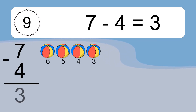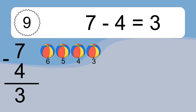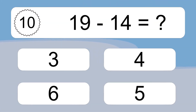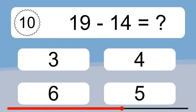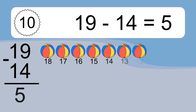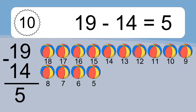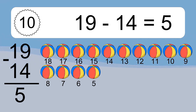7 minus 4 equals what? 7 minus 4 equals 3. Let's count it. 6, 5, 4, 3. 19 minus 14 equals what? 19 minus 14 equals 5. Let's count it. 18, 17, 16, 15, 14, 13, 12, 11, 10, 9, 8, 7, 6, 5.